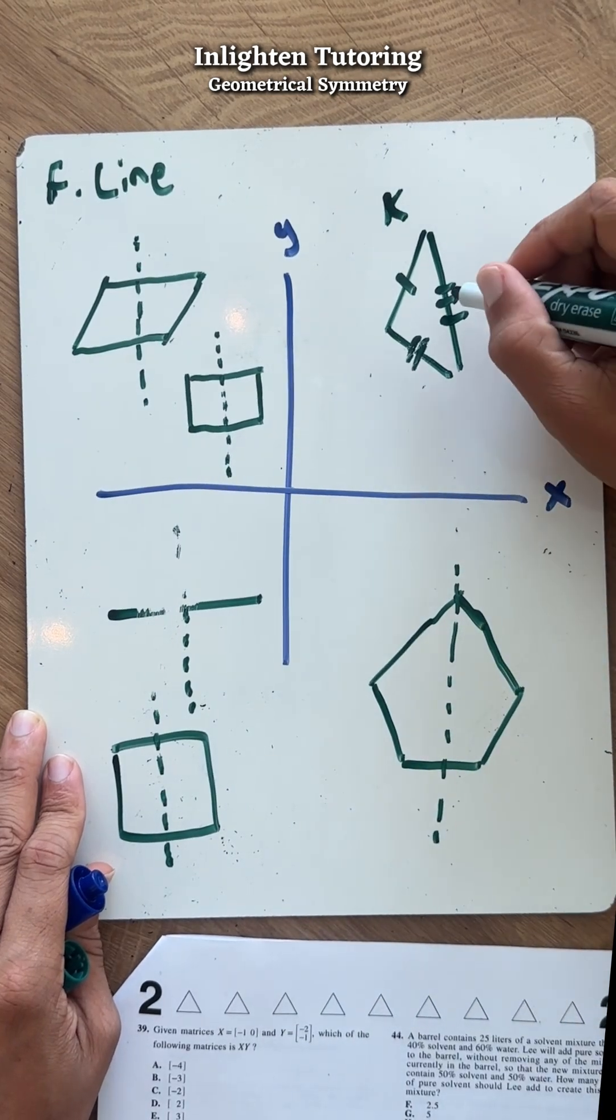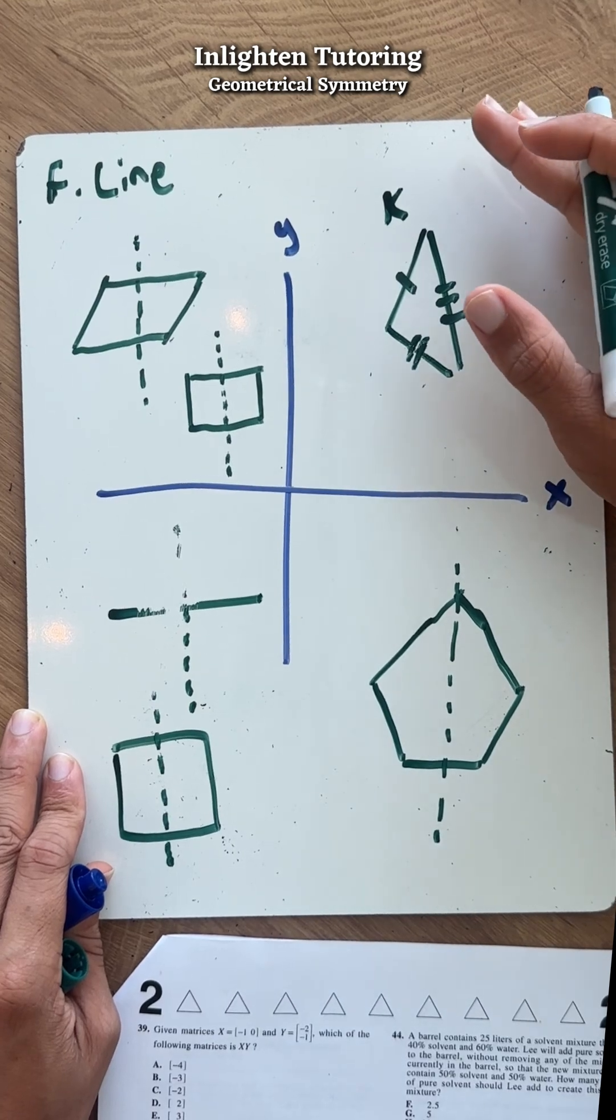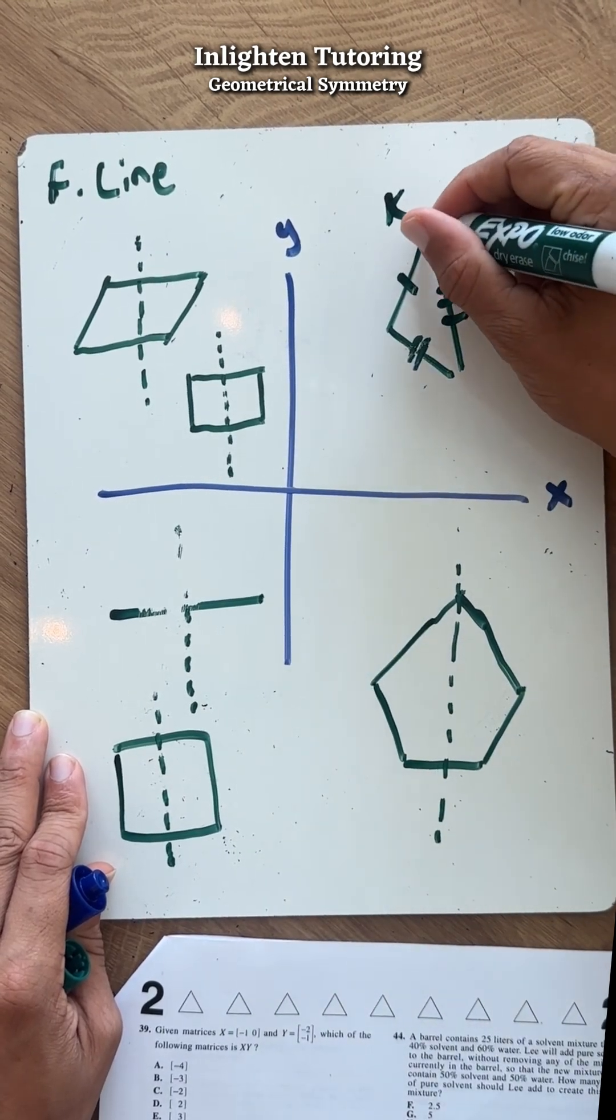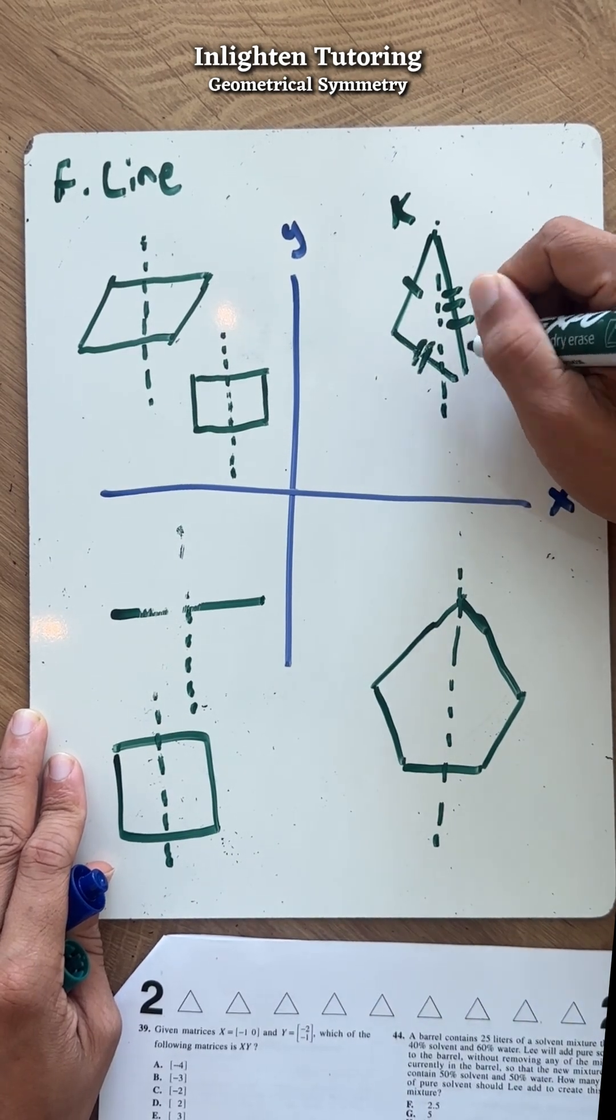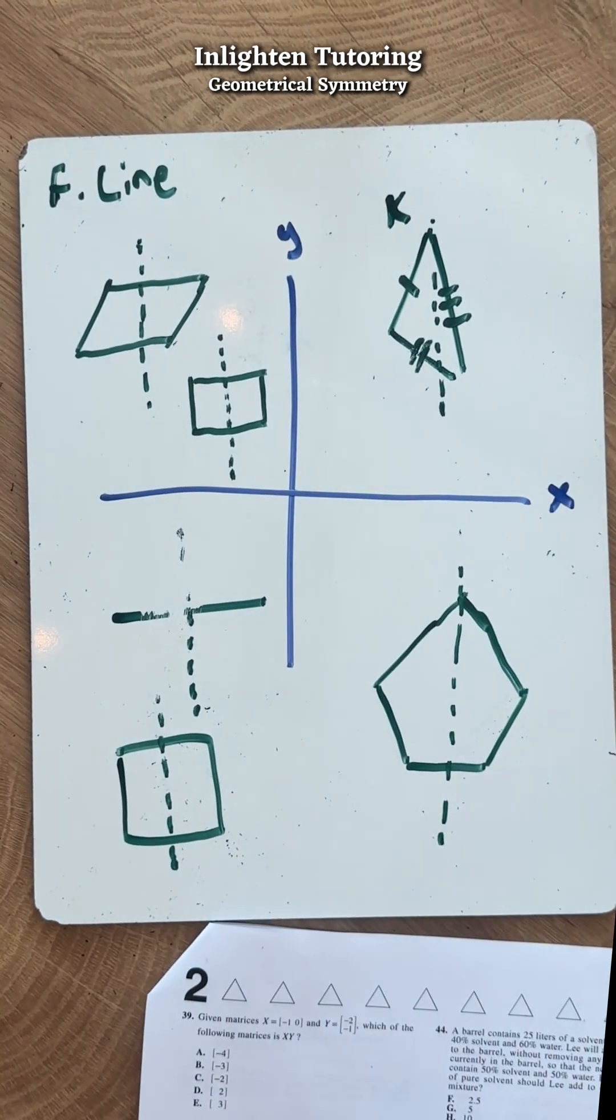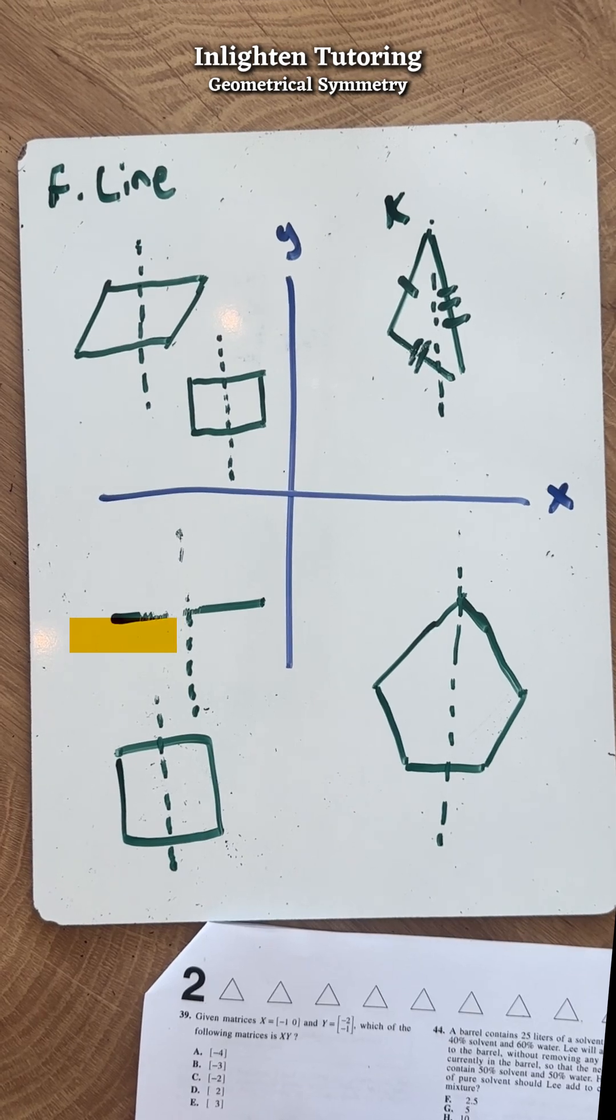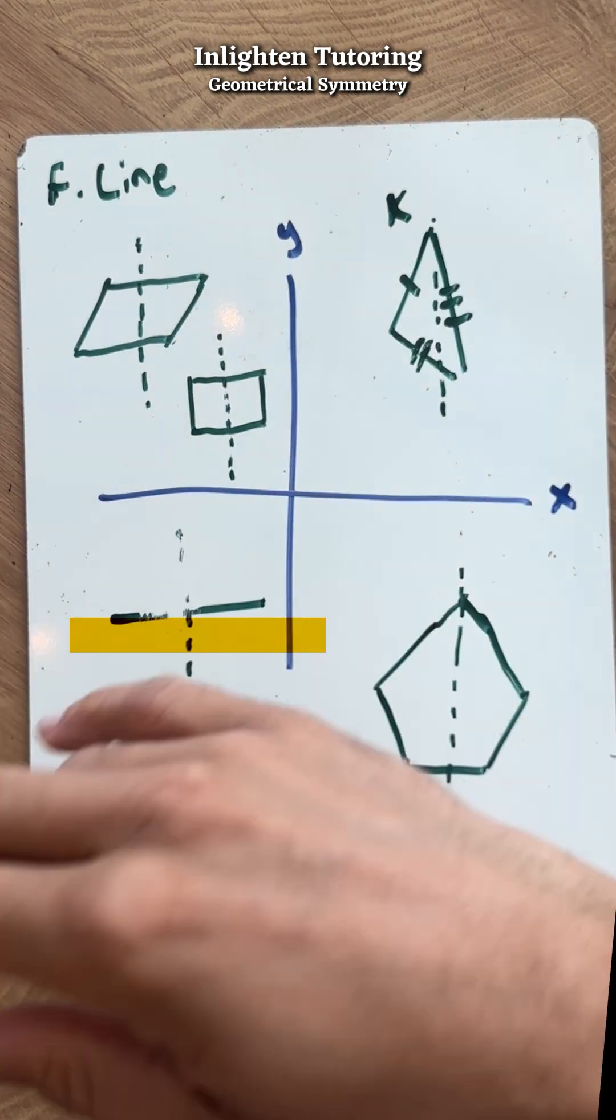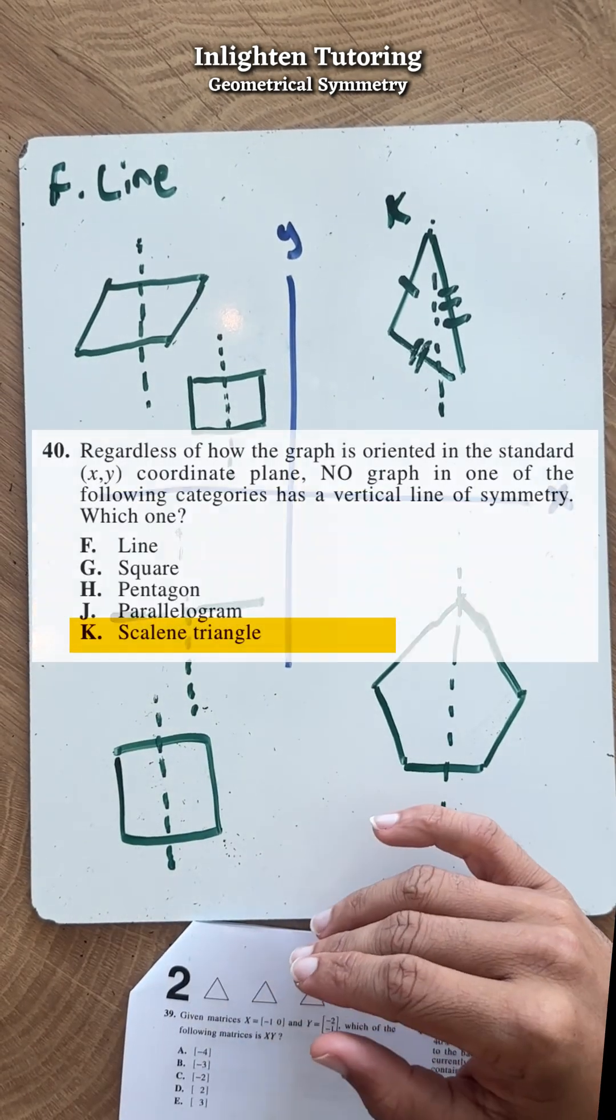Scalene triangle: because none of the sides are going to be equal to one another, it means that at no point can you put a line down and for it to be equal. You can already tell it's going to be a little bit wonky. Isosceles means two sides are the same. So scalene: no sides are equal. Isosceles: two sides are equal. And equilateral: all sides are equal. That's third grade math.